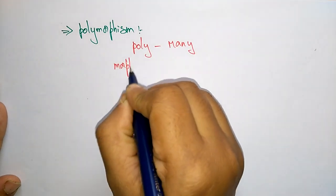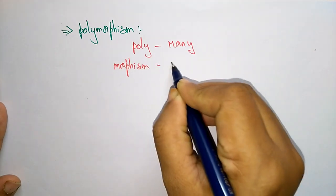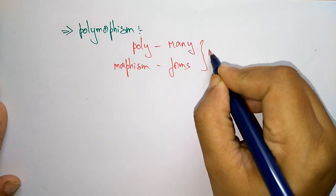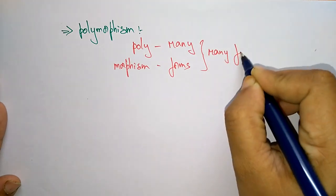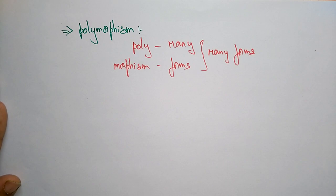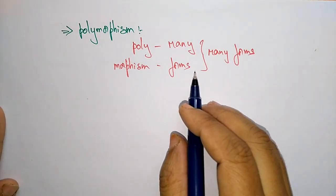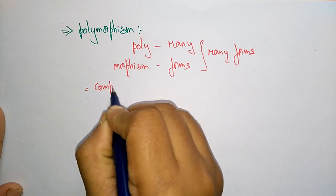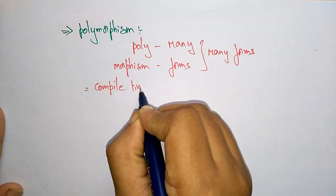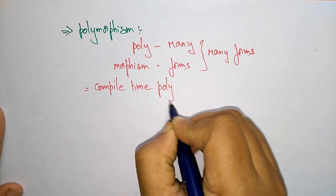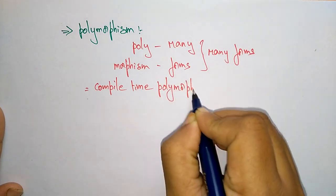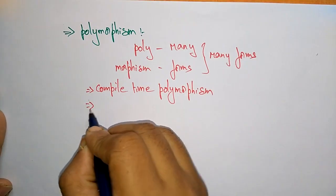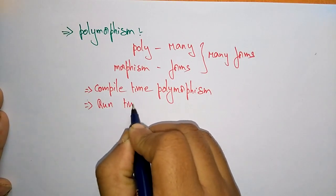Morphism means forms, so it is saying many forms. Whatever you take can be represented in many forms. There are two types of polymorphism: one is compile-time polymorphism and runtime polymorphism.